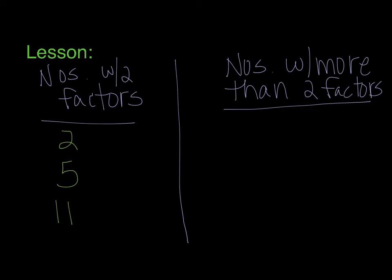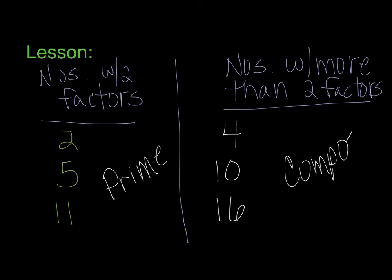Now if we took a look at numbers with more than two factors, the number 4 would fit over here, the number 10, the number 16. Now these are not all of the prime and composite numbers, but if you think about the definition that I just gave you for prime and composite, this would be prime, and this would be composite numbers.